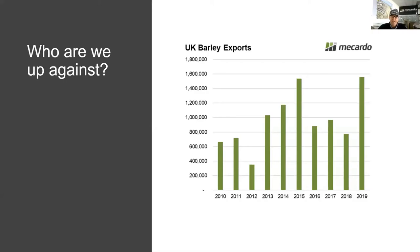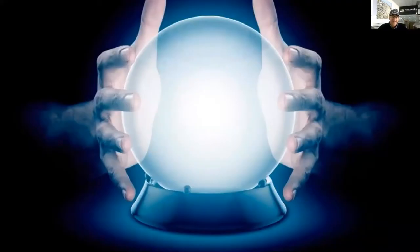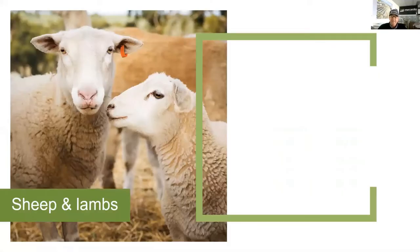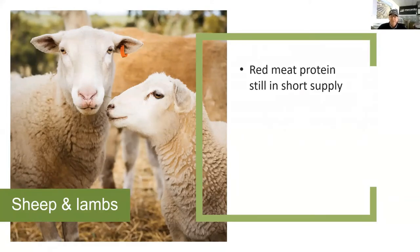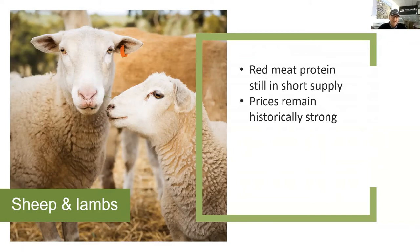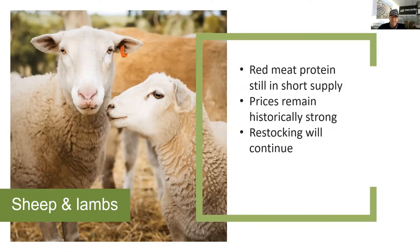Let's get the crystal ball out for sheep and lambs. There's a really strong story for red meat protein demand — it's still in short supply, meaning prices remain historically high. That red meat protein supply shortage is a world shortage, playing across not only sheep and lamb prices but cattle prices. We've also got this situation where restocking is going to continue — even at high prices for restocker sheep, because if lamb and mutton prices are at these levels, the returns to farmers are going to encourage them to keep restocking.